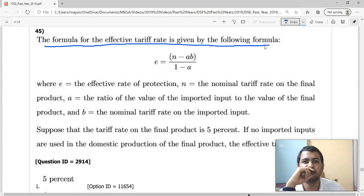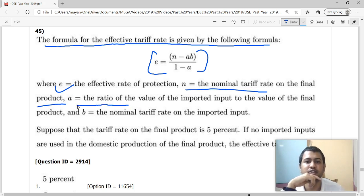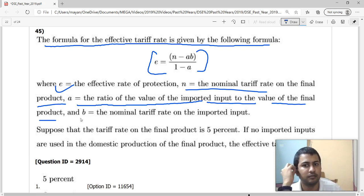The formula for effective tariff rate is given by this thing where E is effective rate of protection, N is nominal tariff on final product, A is ratio of value of imported input to value of final output, and B is nominal tariff rate on imported input.